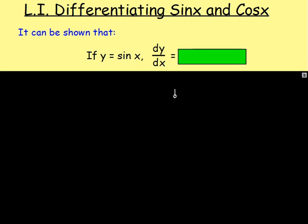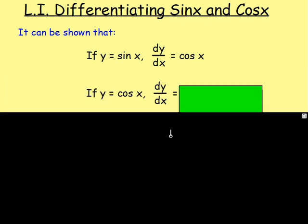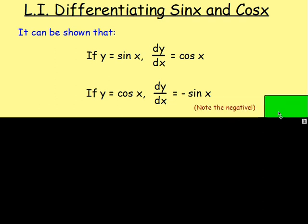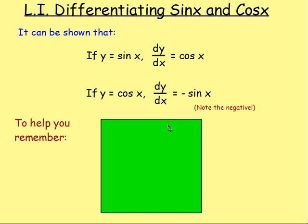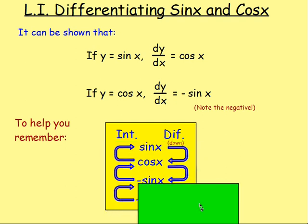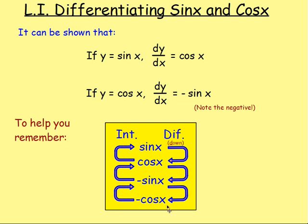It can be shown that if we have y = sin x, we can differentiate that. If you differentiate sin x, you will end up getting cos x. Also, if you have y = cos x and you differentiate that, it's negative sin x. Note there is a negative there. To help you out, I like this wee diagram. I write 'int' for integration and 'diff' for differentiation. Write down: sin, cos, negative sin, negative cos.